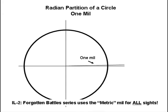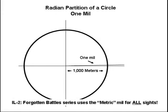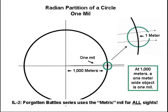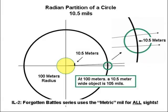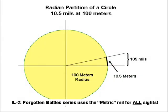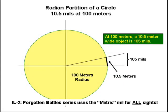The really neat thing is if you take one mil and a radius of a thousand meters, the distance on the circle is one meter. To get 10.5 meters, we use 10.5 mils. Now let's take that distance down to 100 meters. At 100 meters, that 10.5 meters is 105 mils. At 105 mils at 100 meters, the object is 10.5 meters wide.